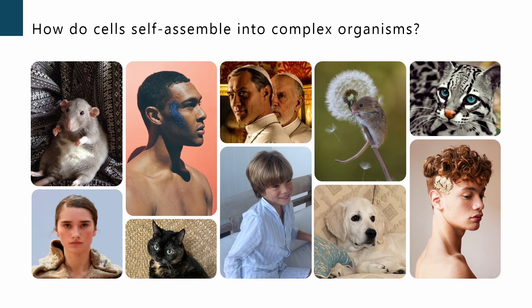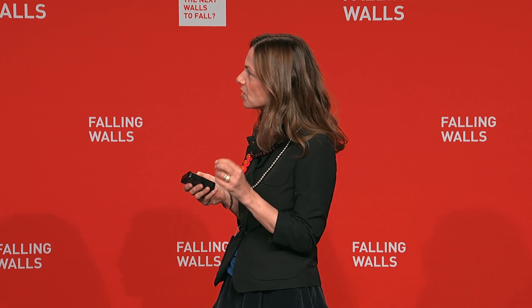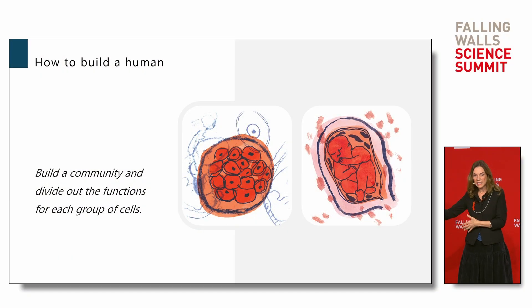The very first thing this fertilized egg has to do is establish a community of cells, and this community is unique in that every single cell has to find its function. It's a bit like a community we build in society — cells have to decide which group will make the future head, which will make the heart, which will make the placenta or yolk sac in which the embryo will grow within the body of the mother.